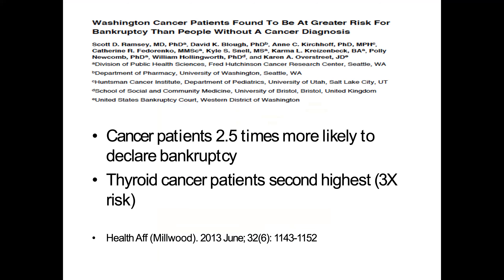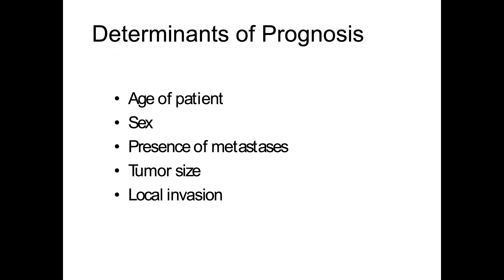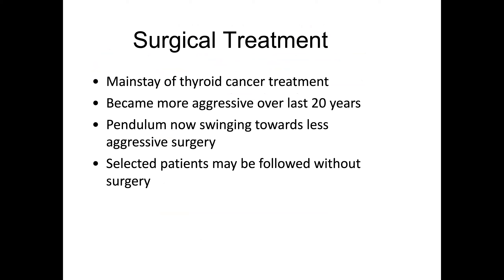Cancer patients are about two and a half times as likely to declare bankruptcy, and thyroid cancer patients have the highest risk, which is interesting since it's such an easily treatable disease. Big prognostic factors include the age of the patient, with females being more prominent. Metastasis is obviously problematic, and large tumors are difficult. Surgical treatment is the main approach for thyroid cancer. Over the last 20 years we've become more aggressive, but as data has been presented, we've split back towards less aggressive surgery, following patients with ultrasound evaluation and biopsies.